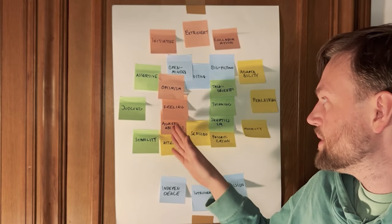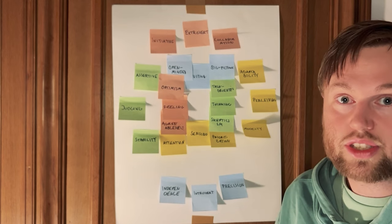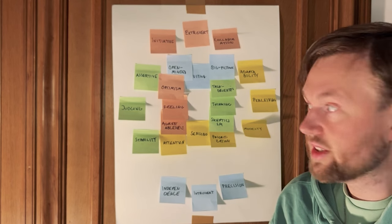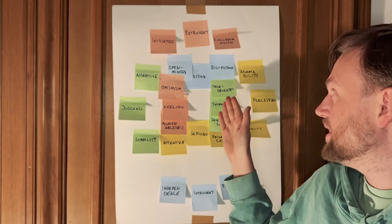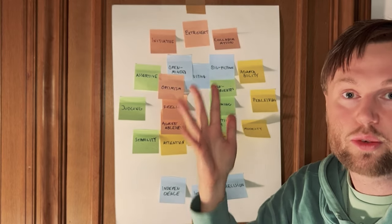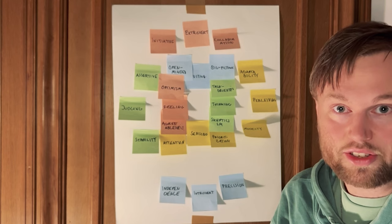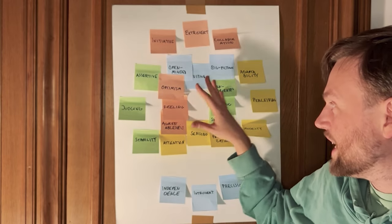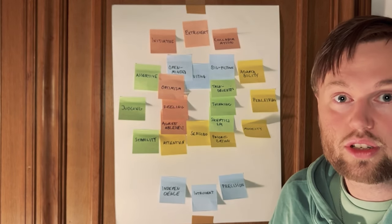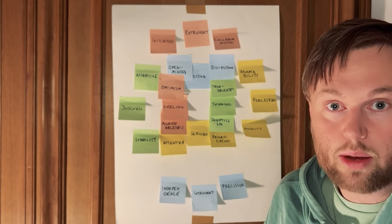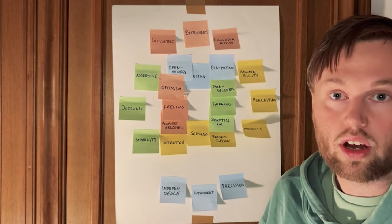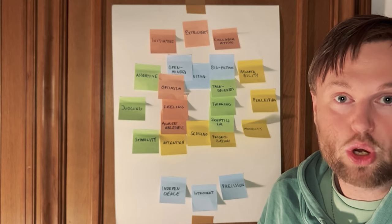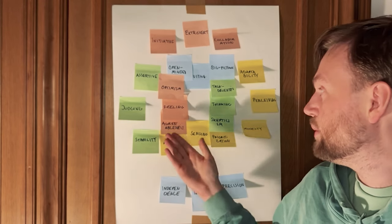Thinking is predominantly task-oriented, while feeling is agreeable. Feeling and sensing types respond much more strongly to seeing and dealing with people and social matters, while thinking and intuitive types light up the most when dealing with things, ideas, tasks, goals, and objectives. Task-oriented types focus on getting the job done and solving the problem. Feeling and sensing types focus on connecting with people, collaborating with the group, sharing moments with others, and being in harmony with others.